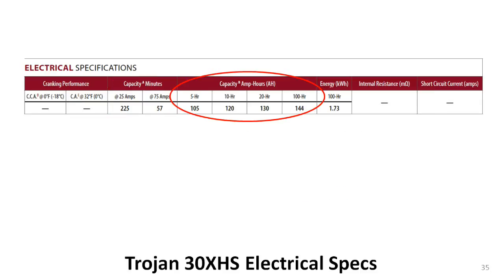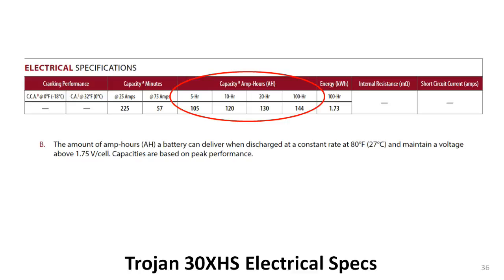The next four columns are also really important. A battery's amp-hour rating is usually the first number, after the voltage, that van dwellers and RVers hear about, and many make buying decisions on that number alone. In this data sheet there are actually four different amp-hour ratings, each based on a different number of hours — 5, 10, 20, or 100. Notice that the shorter the number of hours, the lower the amp-hour rating, which is another way of illustrating that the faster a battery is drained, the faster its rate of drain increases.